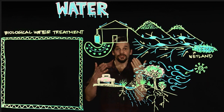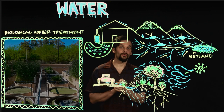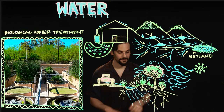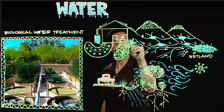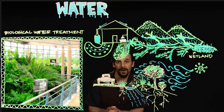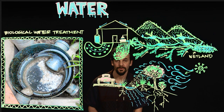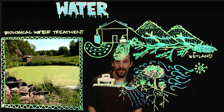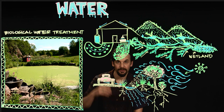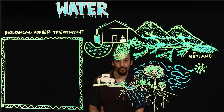We use this fact to our advantage when creating our own wastewater treatment systems. Constructed wetlands, gray water systems, and living machines are all types of biological treatment. We build artificial wetlands to handle our wastewater and use the biology of healthy soil and aquatic plants to break the bonds and absorb pollutants.